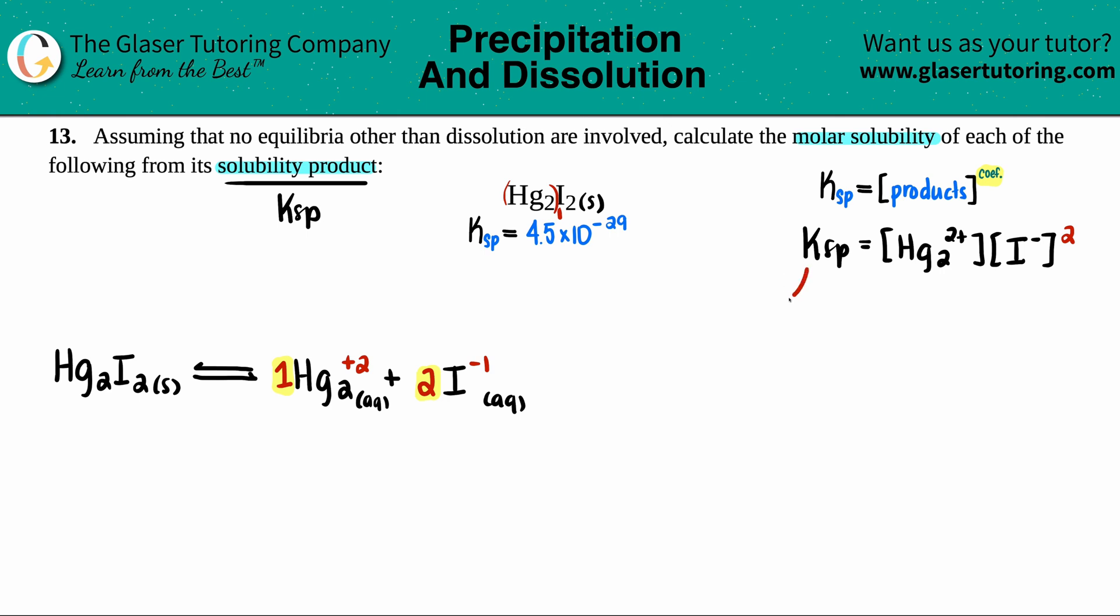Now, I know the Ksp number. That's 4.5 times 10 to the negative 29th. But I don't know what these concentrations are. So I'm going to have to use variables. We go back to the balanced equation to write our variables. Let's pick X. So I'm going to say, I don't know what this concentration is at equilibrium. So I'm going to say X.